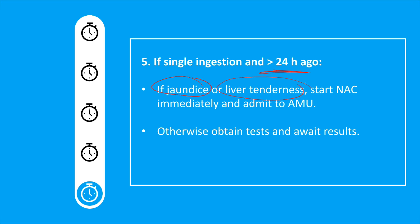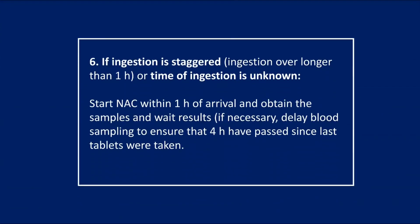For single ingestion more than 24 hours ago: if there are serious symptoms like jaundice or liver tenderness, start N-acetylcysteine immediately and admit the patient. If no symptoms, await investigation results. If the ingestion is staggered — meaning taken over longer than one hour, for example 2g, then 3g two hours later, then 1g later — this is called a staggered overdose. In this case, start N-acetylcysteine within one hour of patient arrival and send for blood samples.